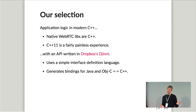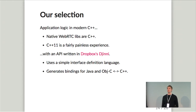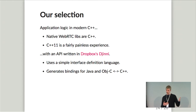On top of the C++ implementation, we have an API written in Dropbox's Djinni. This is a tool that Dropbox open sourced in 2014, and it's built for this exact task. It uses a simple interface definition language which is language-agnostic to generate bindings for Java and Objective-C. It generates Java, Objective-C, and C++ on the backend side, and also handles all the data marshalling between the languages. It's turned out to work really well.